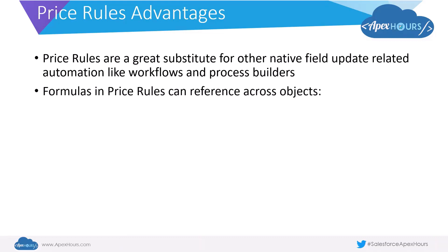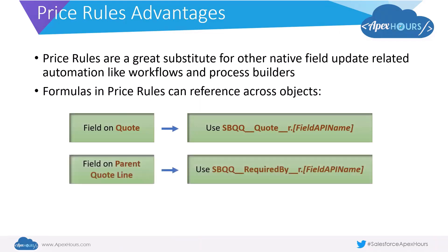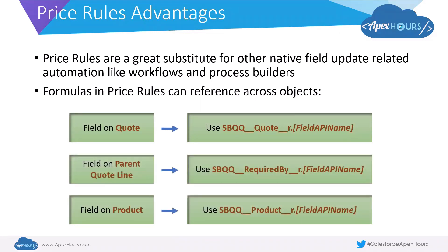There's another advantage: you can use formulas in price rules to reference across objects. Some examples are when you're referencing a field on a quote using the format given, or even referencing parent quote lines or fields on products. Using the referencing feature on formulas, you can traverse across objects and build complex logic which goes across multiple objects. Let's look at a quick example of this in the org now.